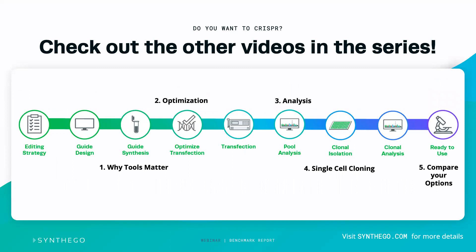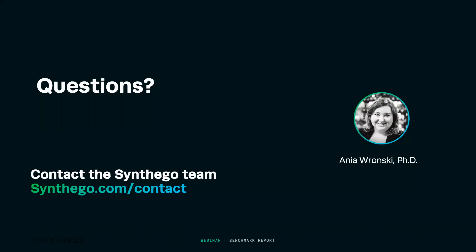As a reminder, this is module three in the Benchmark report series. Module one covered why tools matter, module two covered optimization, and upcoming webinars will cover single-cell cloning and comparing your options for doing CRISPR yourself versus outsourcing. Thank you for joining, and please feel free to reach out at synthago.com/contact. We hope to see you at the next webinar.